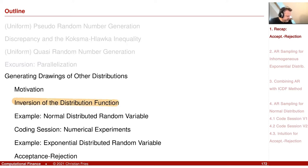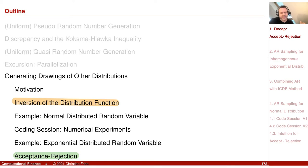What we started in the last session was the acceptance-rejection method. Maybe you have the question: if inversion of the distribution function is such a nice method, why should I think about acceptance-rejection? Once we have understood the acceptance-rejection method, we will see that it has disadvantages. But in the end, we will arrive at another improved method for Monte Carlo: weighted Monte Carlo.